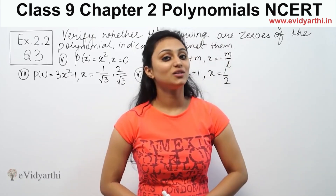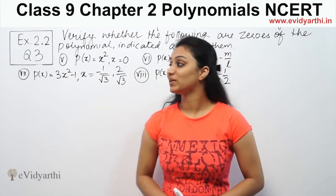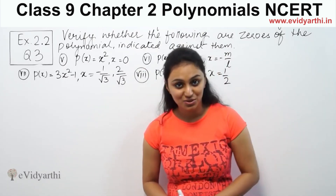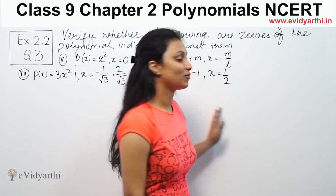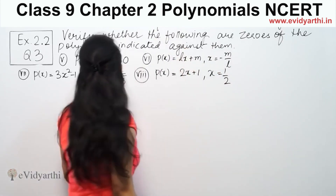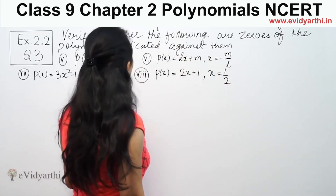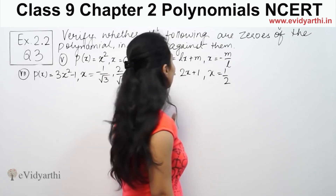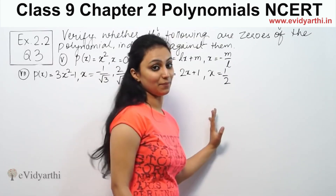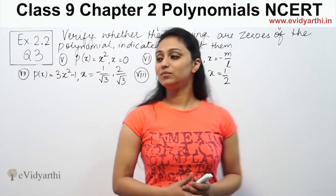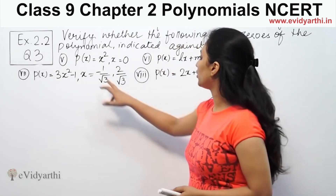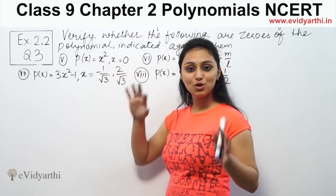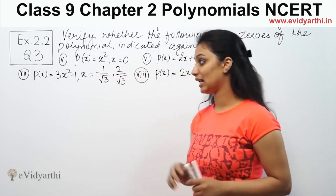Hi, I'm Kushku with another question on polynomials. This is question number 3 from exercise 2.2, page number 35 from NCERT. We need to verify that the following numbers are zeroes of the given polynomials.